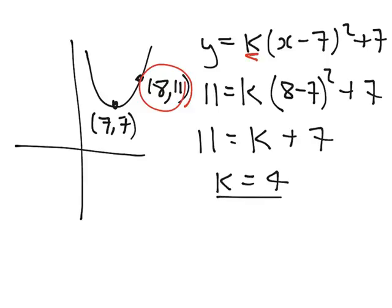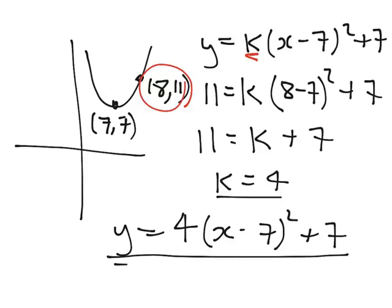Then we can put that back into our original equation. 4 is our value of k, x minus 7 all squared plus 7. That is the full equation of that parabola.